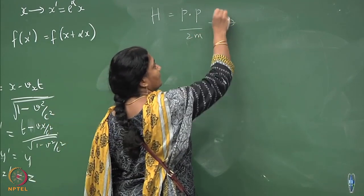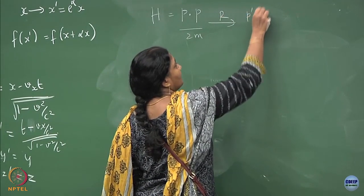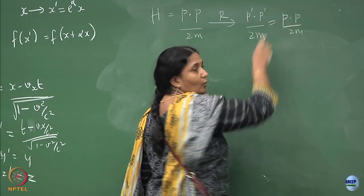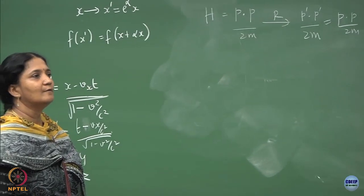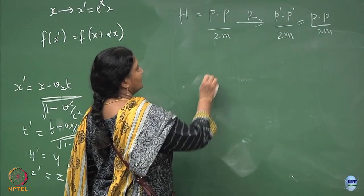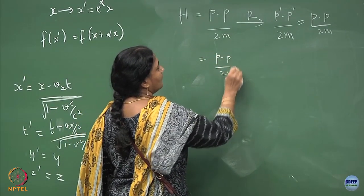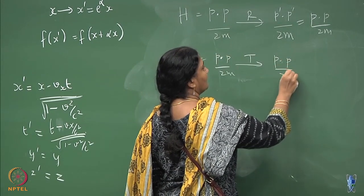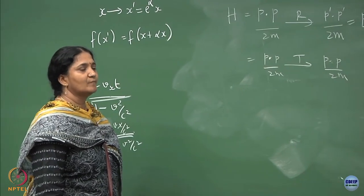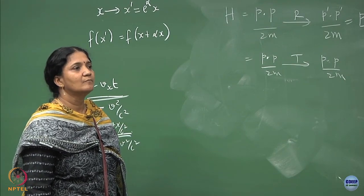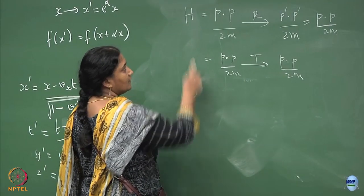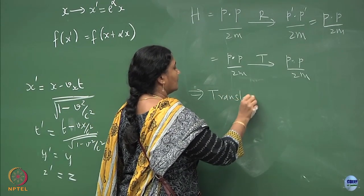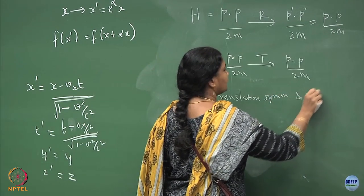If you do a rotation, it becomes p prime dot p prime divided by 2m, but this is the same as p dot p — it is a dot product of the vectors. Similarly, under translation, p dot p remains unchanged; it is invariant. So this implies this Hamiltonian respects both translational symmetry and rotational symmetry.